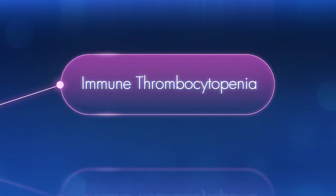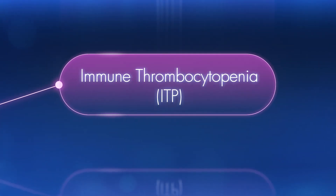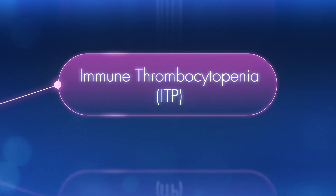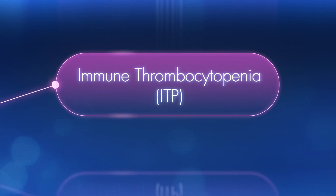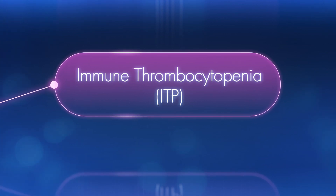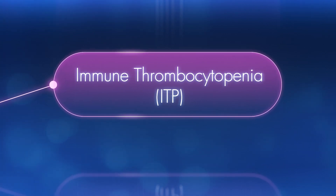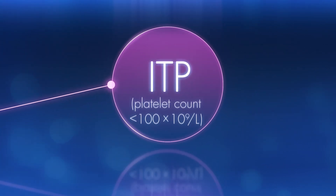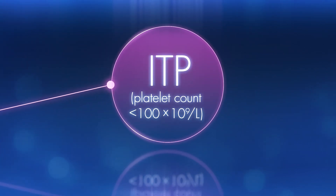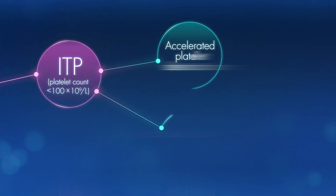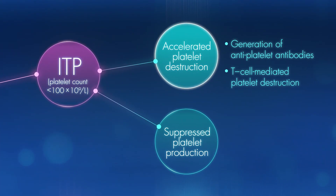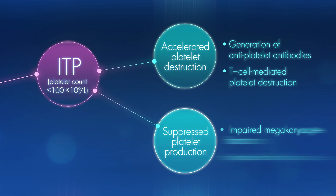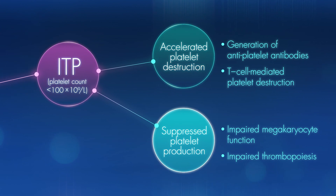Immune thrombocytopenia, or ITP, is a complex autoimmune disorder characterized by thrombocytopenia — that is, a platelet count of less than 100,000 per microliter — resulting from accelerated platelet destruction and suppressed platelet production.